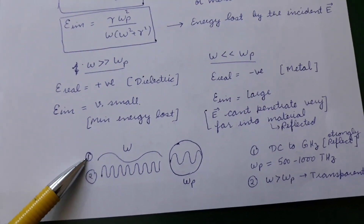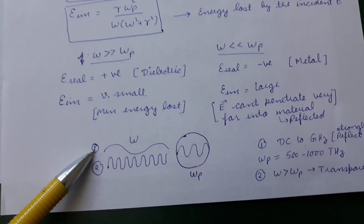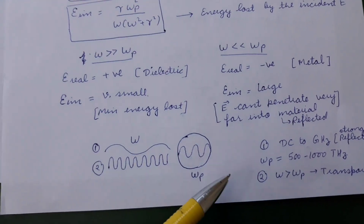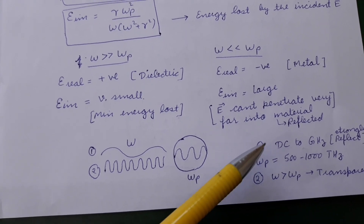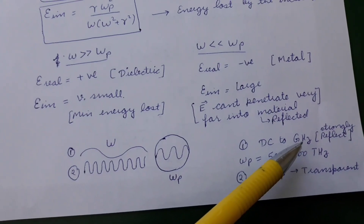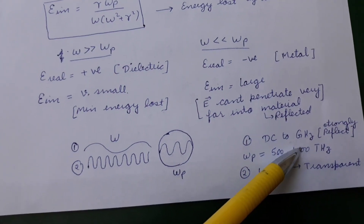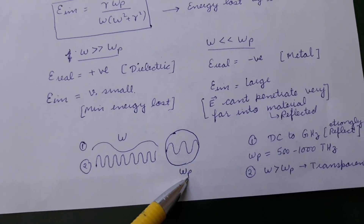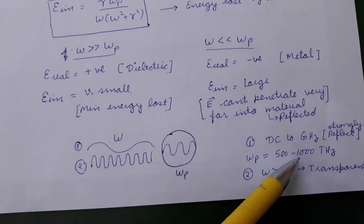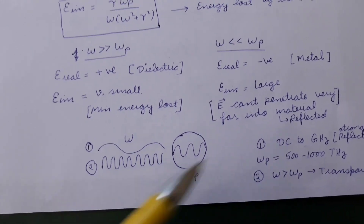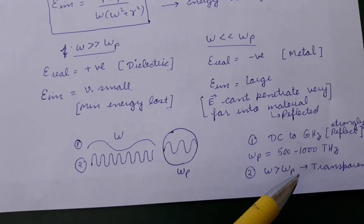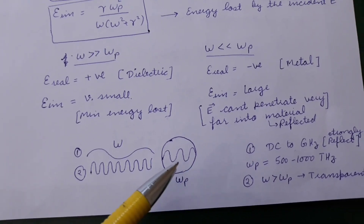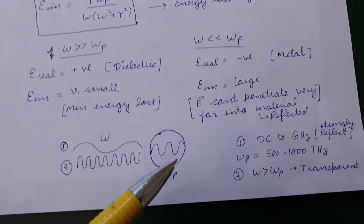The lower frequency range where reflection occurs spans DC to gigahertz, while the frequency range of plasma oscillations is from 500 to 1000 terahertz. Frequencies much higher than the plasma frequency lead to the material being transparent to that kind of photon.